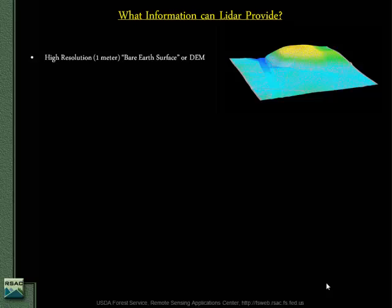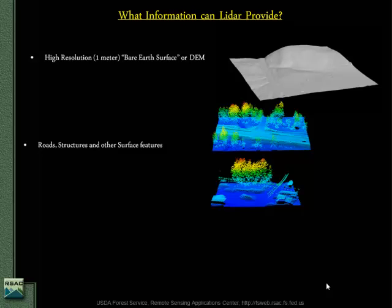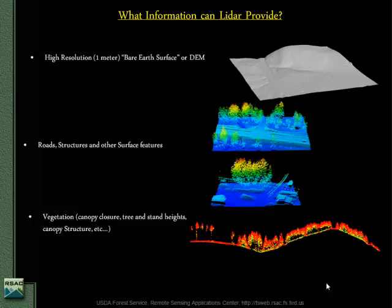Essentially, anything you can see from above you can see with LiDAR, and you get a 3D picture of it — power lines, the ground surface, structures, roads, and a lot of hydrology applications. But what we're going to talk about today is vegetation.